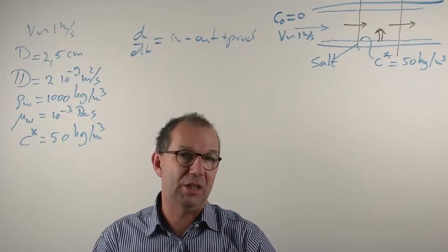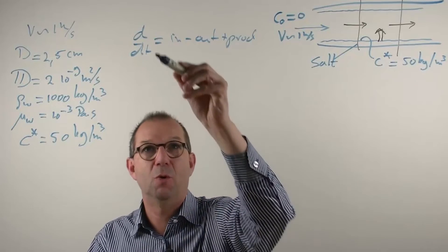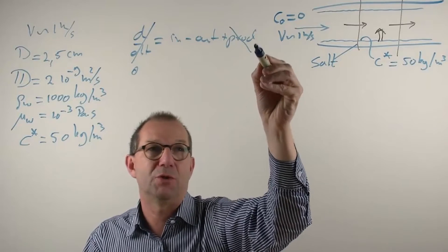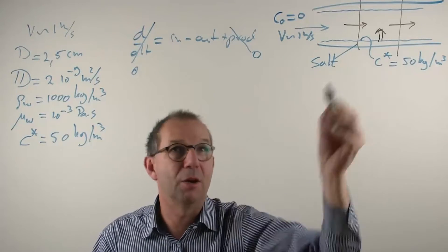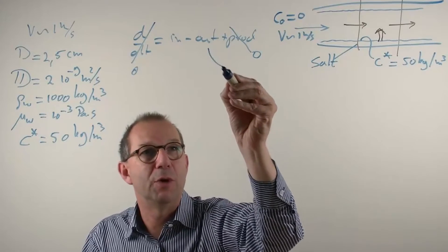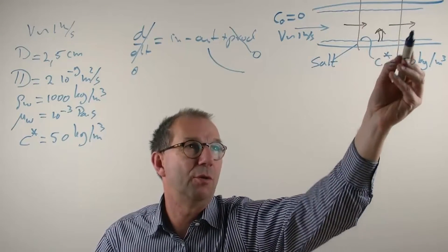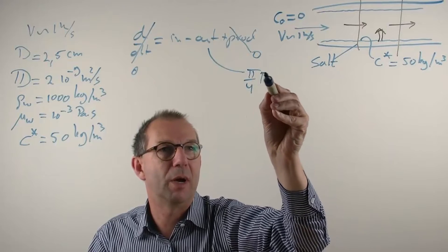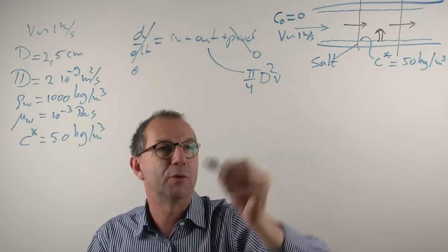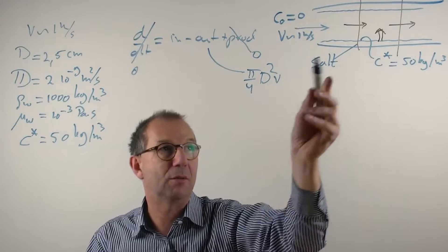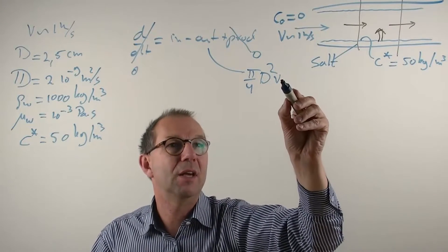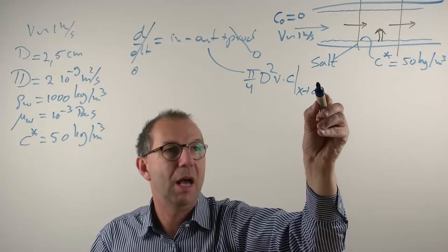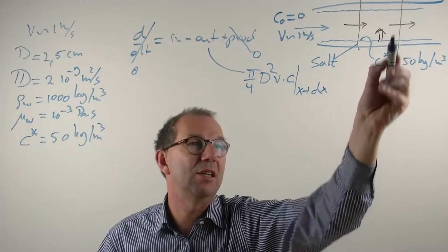It's by and large steady state. These are slow processes, so I'm going to equate this to zero. There is no production of salt, you don't produce anything, stuff comes in and goes out. There is an outflow that is the flow rate here, so π/4 d² as the area times the velocity of the water, this is just a volumetric flow going out and that takes with it the concentration of the bulk which are marked with c and a subscript x plus dx because it's taken at this side.